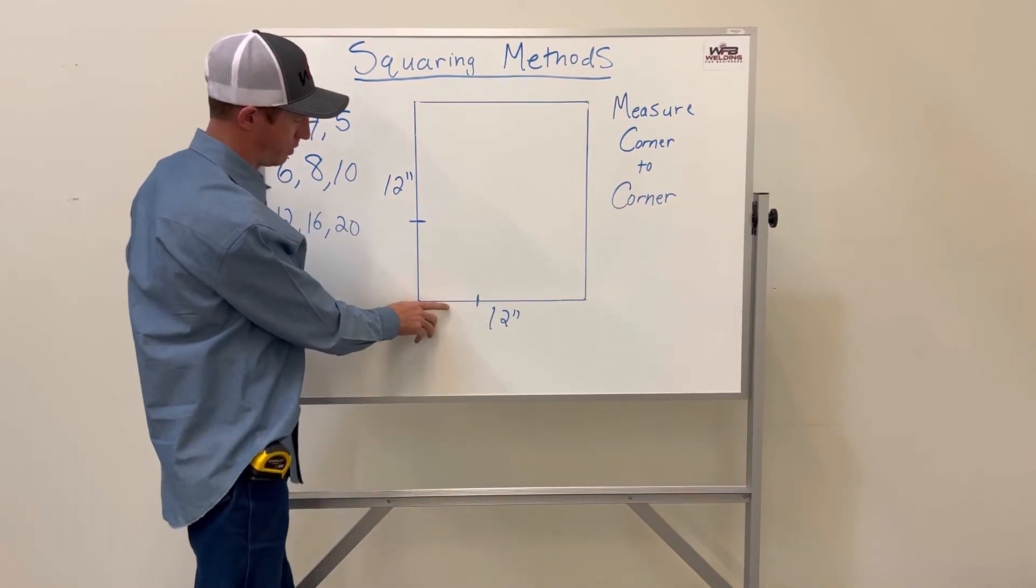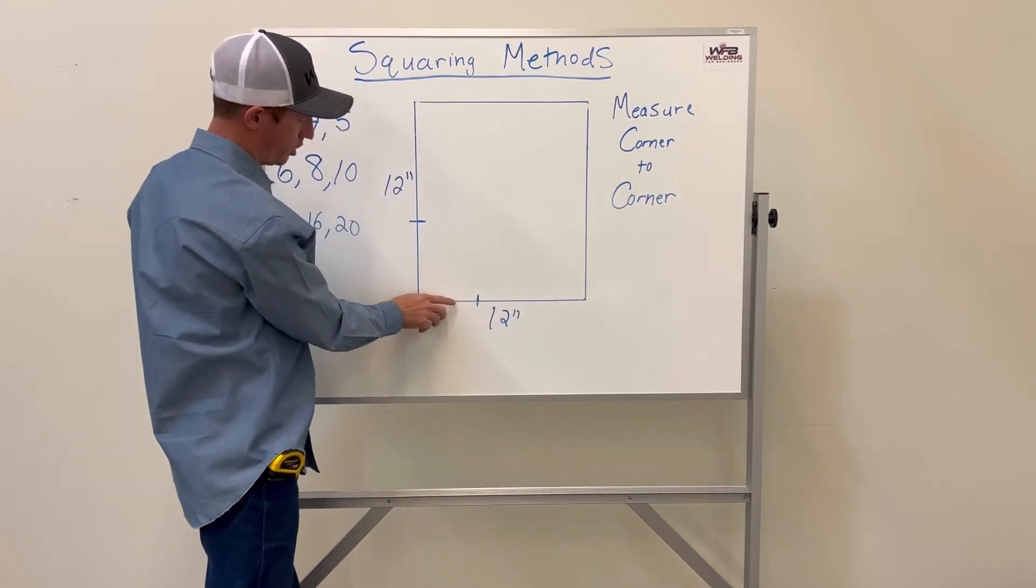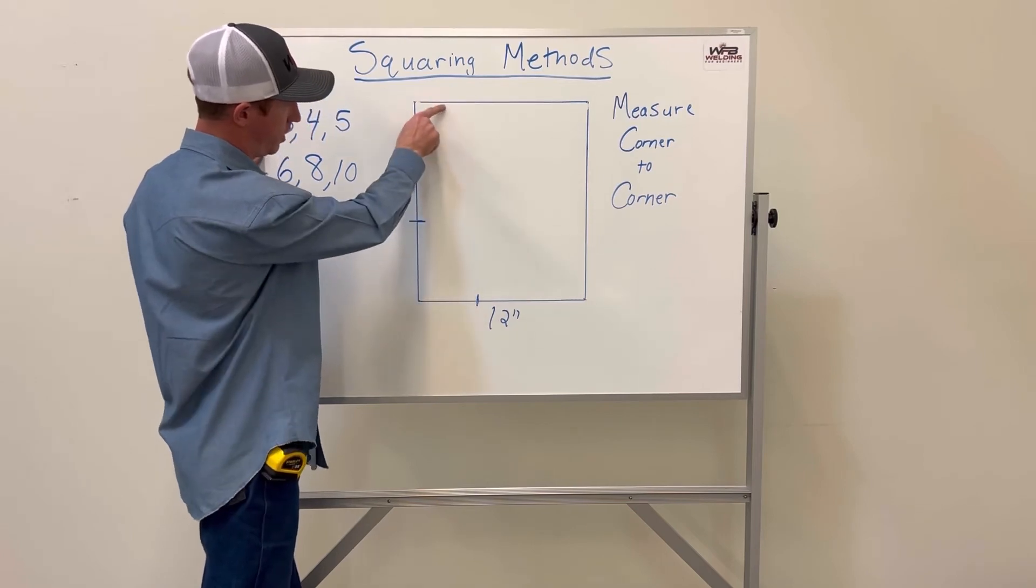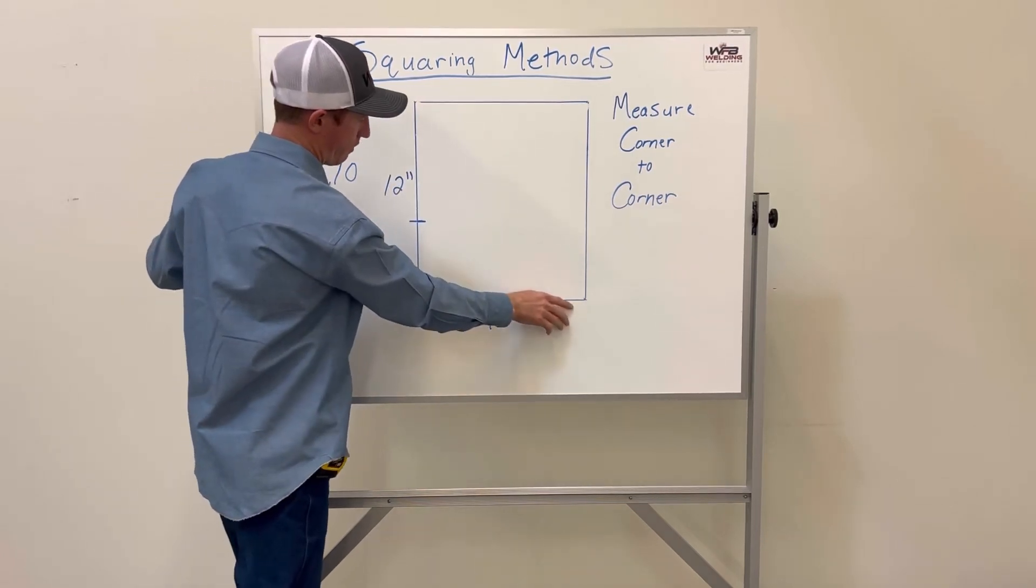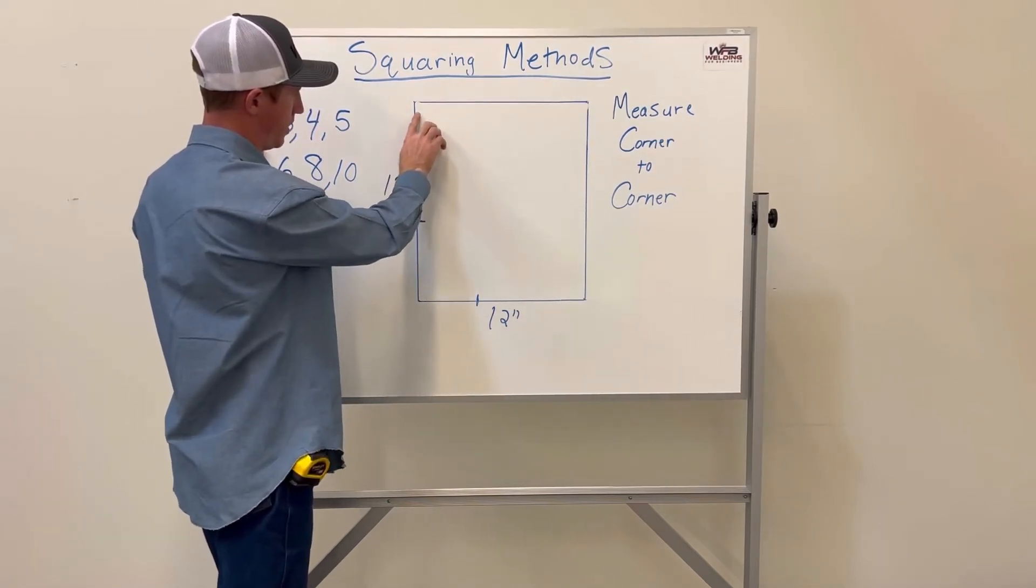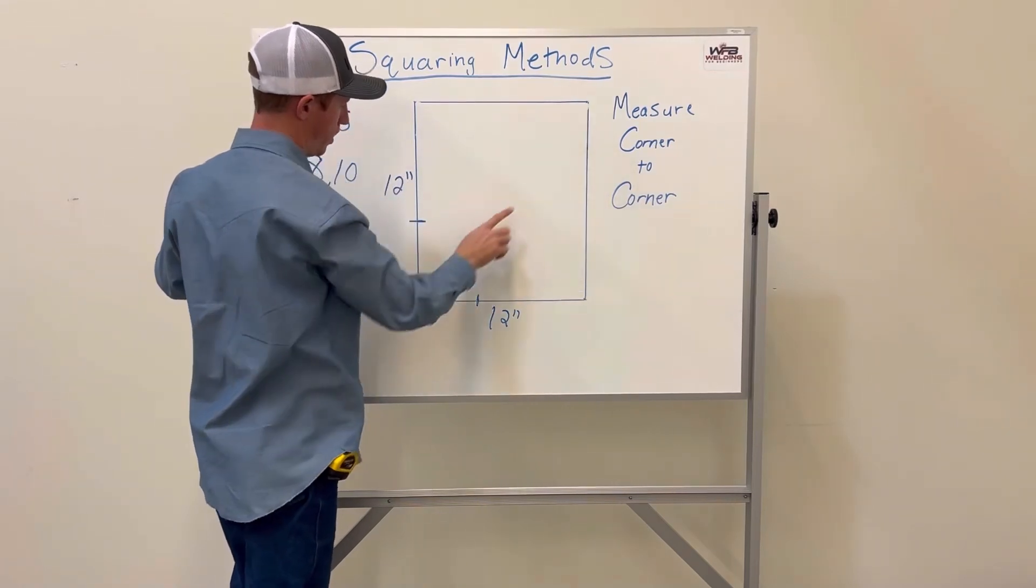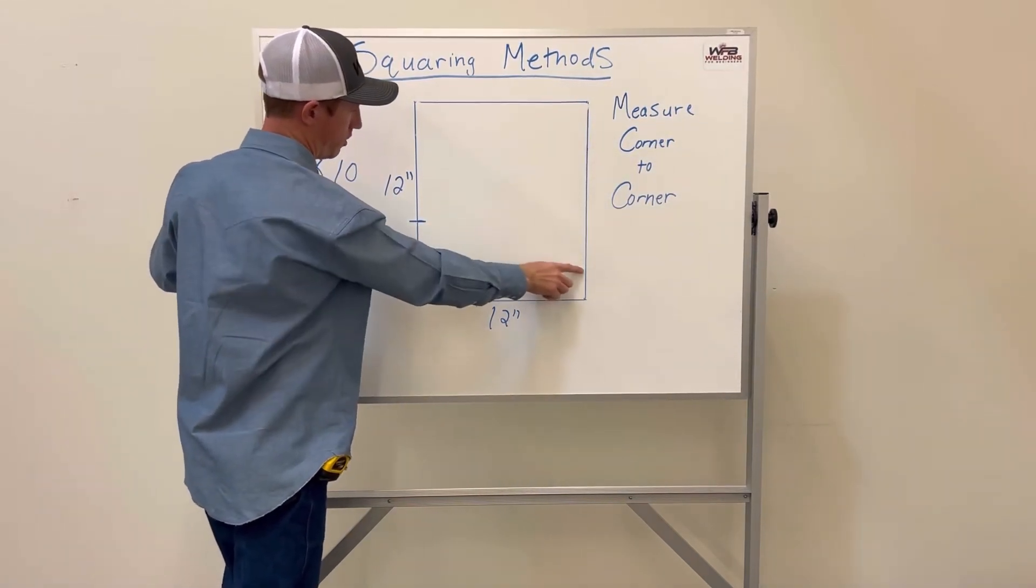Once you made this perfect 90-degree corner, you can measure from here to here up 12 inches, and from here to here up 12 inches. Then you would measure from the top over 12 inches, and from here to here 12 inches.